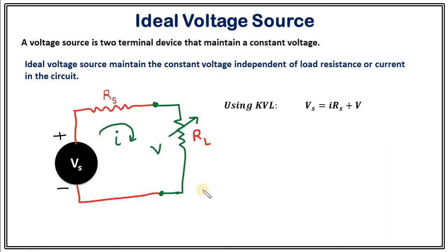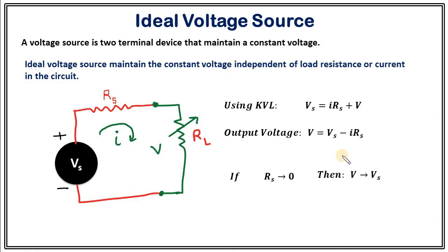If we apply KVL, from Kirchhoff's Voltage Law we can write: Vs = I·Rs + V, and from here the output voltage V = Vs − I·Rs. The output voltage depends upon the current I. If load resistance changes, the current in the circuit will change, and thus the output voltage will change. For the ideal case, Rs should be zero. Once Rs equals zero, V will equal Vs, so even if we change RL, V will always be constant.